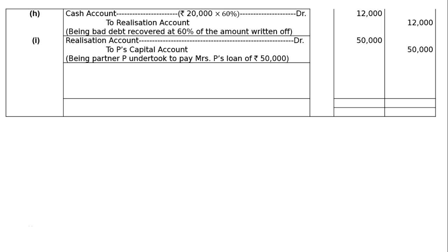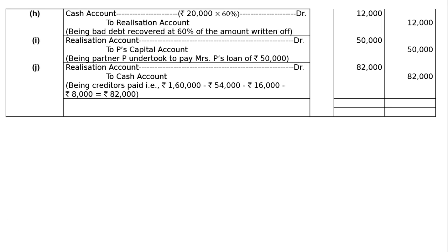Part J: trade creditors Rs.1,60,000 — half the trade creditors accepted plant and machinery at an agreed valuation of Rs.54,000, and cash in full settlement after allowing a discount of Rs.16,000. Remaining creditors Rs.80,000 were paid at 90% in final settlement. Realization account debited to cash account Rs.82,000: total creditors Rs.1,60,000 less Rs.54,000 for machinery, less Rs.16,000 discount, leaving Rs.80,000 paid at 90% = Rs.72,000, plus Rs.10,000... giving Rs.82,000. The journal totals Rs.1,55,000 in both debit and credit columns.